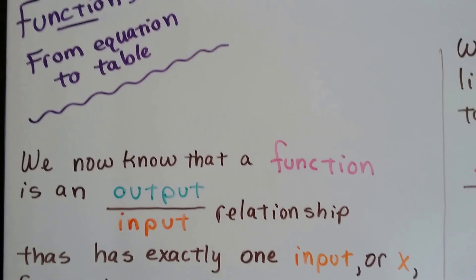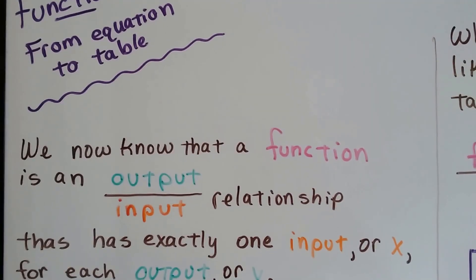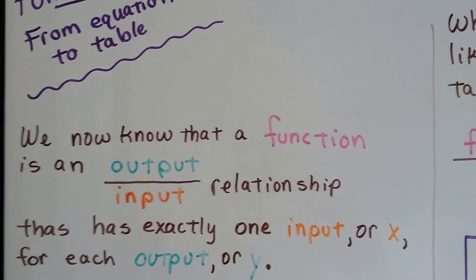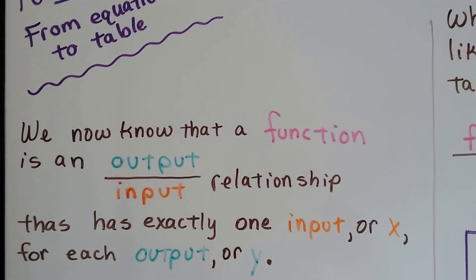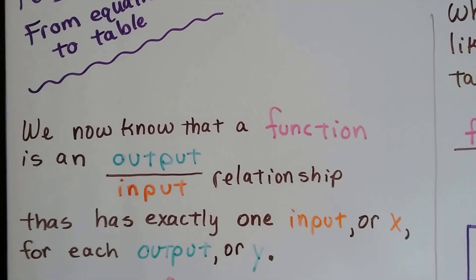We know that a function is an output-input relationship that has exactly one input, or x, for each output y. We learned that in sixth grade, didn't we?